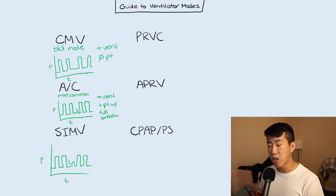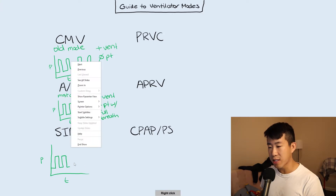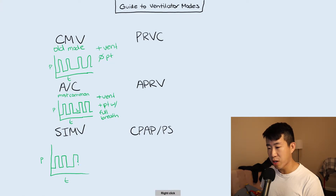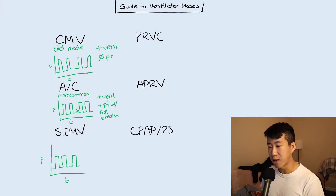The reason it's called synchronized is that if a spontaneous breath is close enough to when a machine-delivered breath is going to be due — for example, the machine breath was due here but the patient wanted to take a breath slightly earlier — then the machine is going to synchronize and give a full machine-delivered breath at that time. But if it's in a refractory period in the middle, the patient can just take their own spontaneous breath. So this is plus vent and then plus patient with a completely spontaneous breath.